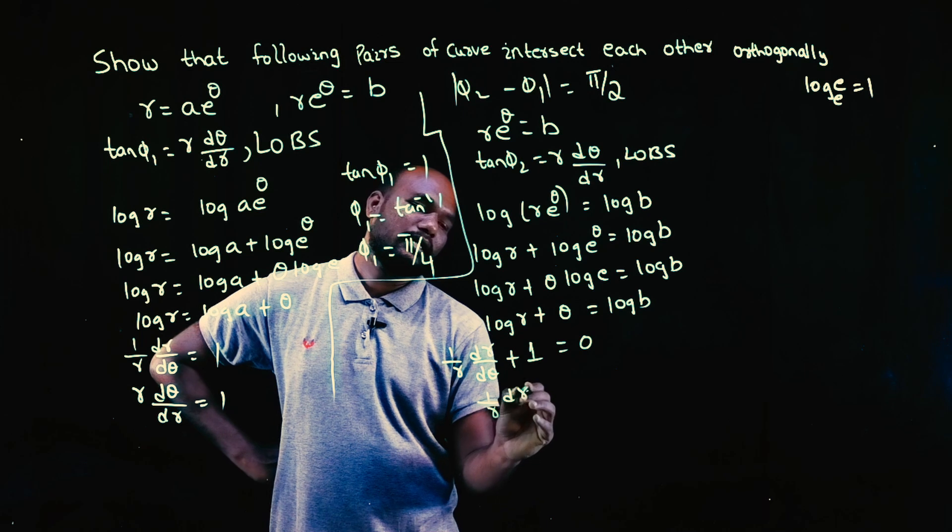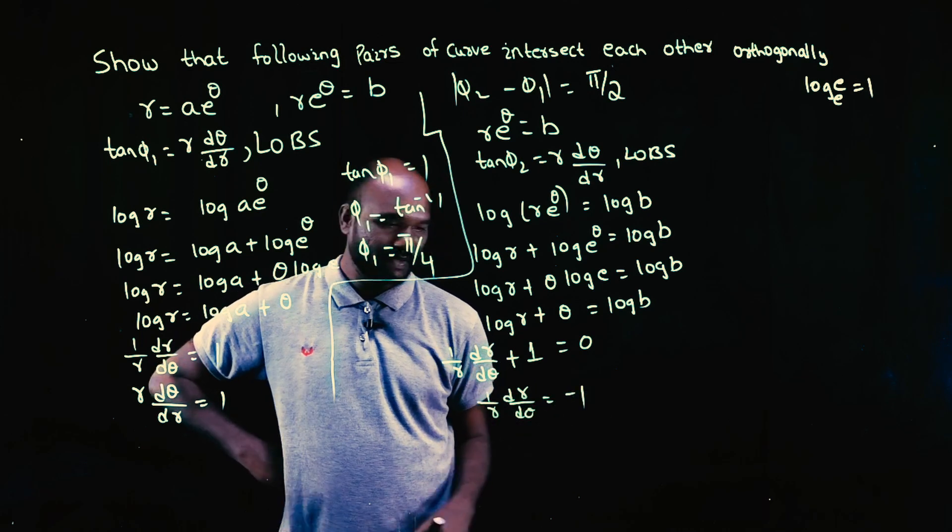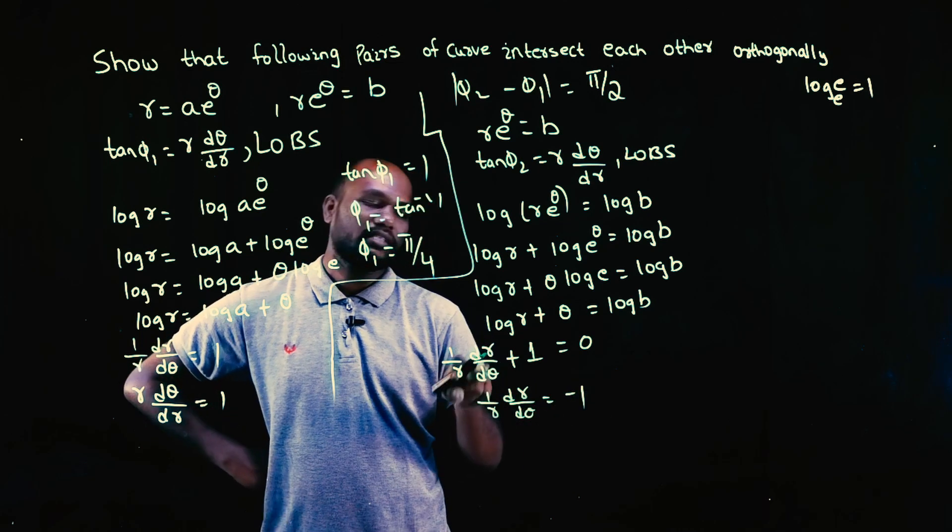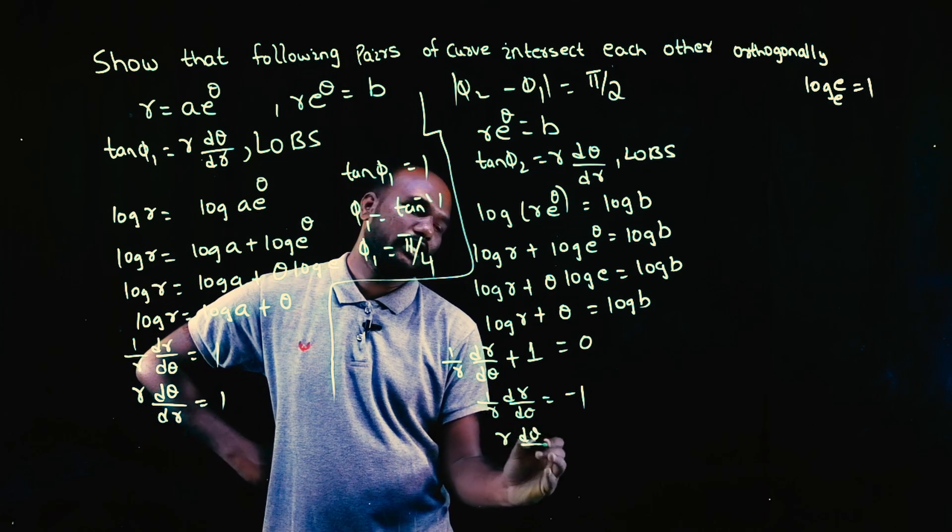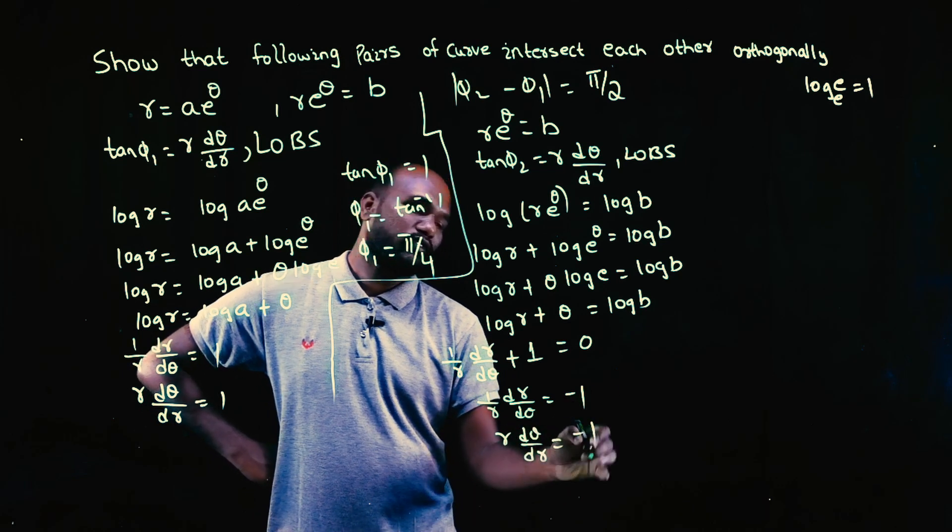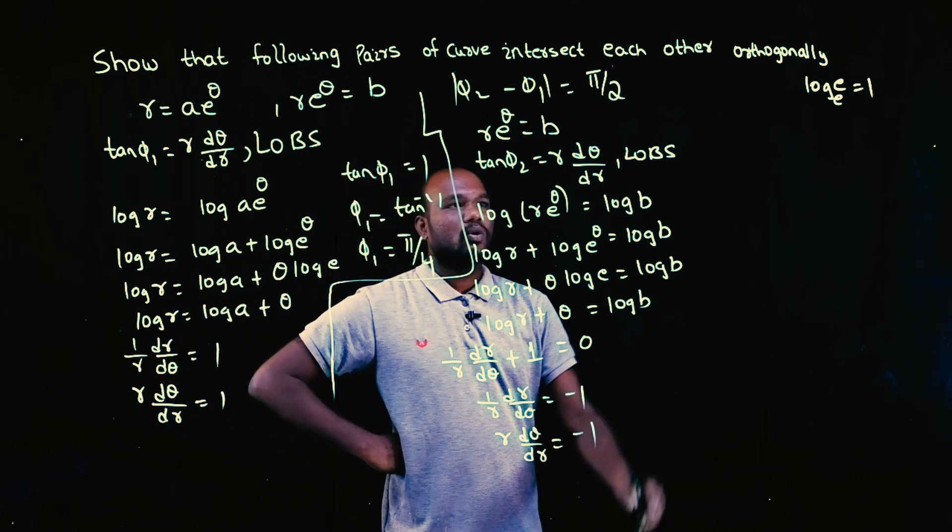So 1 by r dr by d theta is equal to minus 1. I'm not interested in 1 by r. Just I'll flip it: r times d theta by dr is equal to minus 1. Flip is minus 1 only. Now what we got?